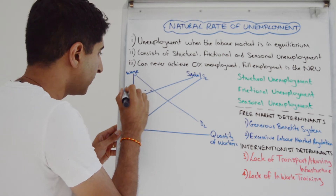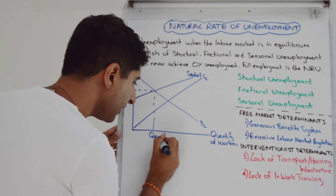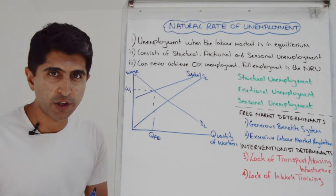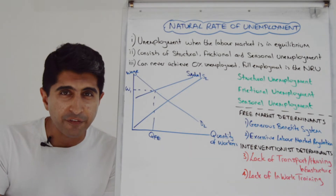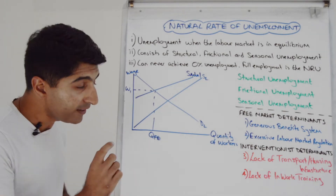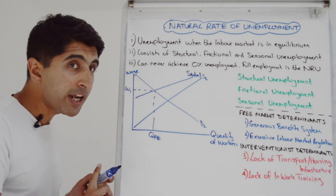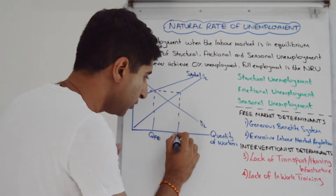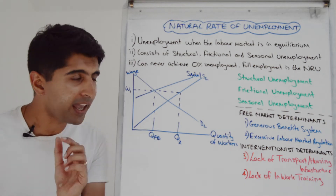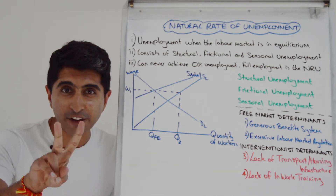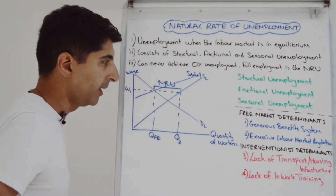That equilibrium occurs at wage rate W1 and quantity of workers — let's call it QFE. FE stands for full employment. This corresponds to YFE on an AD and AS diagram. So QFE is the number of workers in work — that is full employment. But at that wage rate of W1, Q2 workers are willing and able to work, yet only QFE workers are actually taking jobs. The difference between those two quantities represents the natural rate of unemployment.